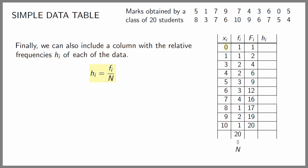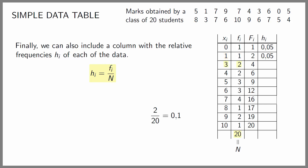In our example the relative frequency of datum 0 — its absolute frequency divided by the total number of data n — is 1 divided by 20 which is 0.05. The relative frequency of 1 is 1 divided by 20 which is 0.05. The relative frequency of 3 is 2 divided by 20 which is 0.1. The relative frequency of 4 is 2 divided by 20 which is 0.1. The relative frequency of 5 is 3 divided by 20 which is 0.15. The relative frequency of 6 is 3 divided by 20 which is 0.15. The relative frequency of 7 is 4 divided by 20 which is 0.2.